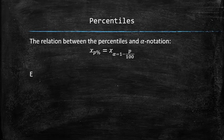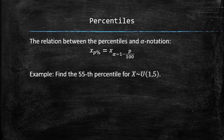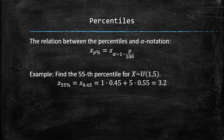Similarly, we can express the 55th percentile of a uniform random variable with parameters 1 and 5 as x sub 0.45, which we know how to find using the previously discussed method.